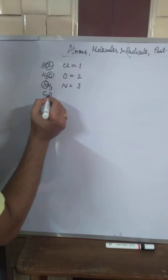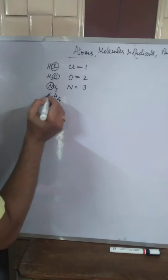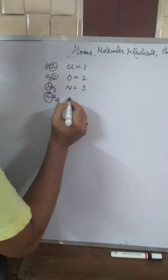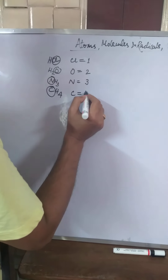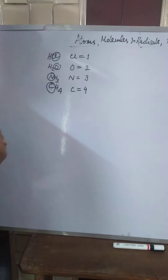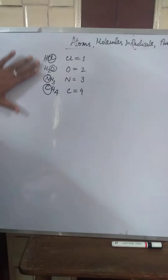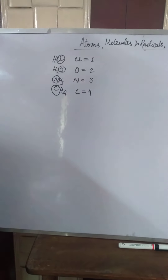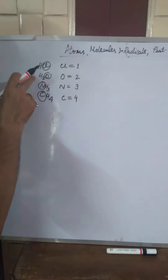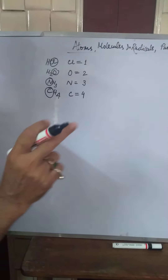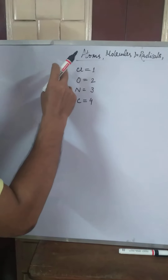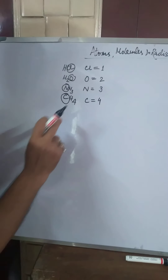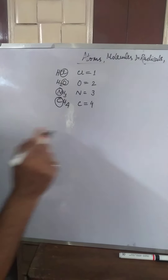This is the formula of methane, CH4. Here, one carbon atom is attached with four hydrogen atoms. So the valency of carbon is four. From this example, it is clear that the number of hydrogen atoms attached with one atom or one radical of that particular compound determines its valency.